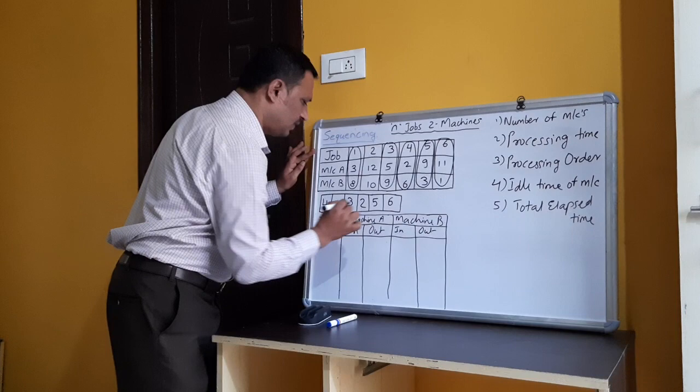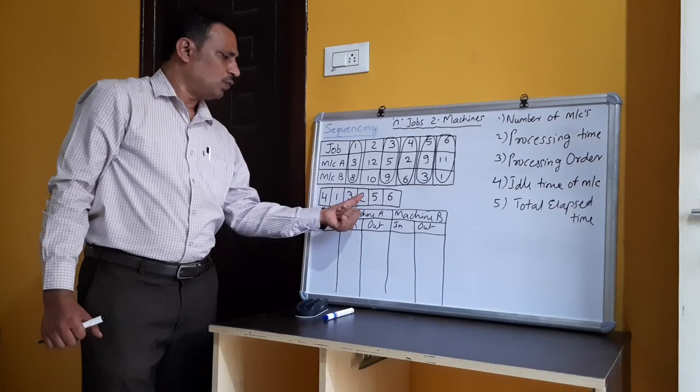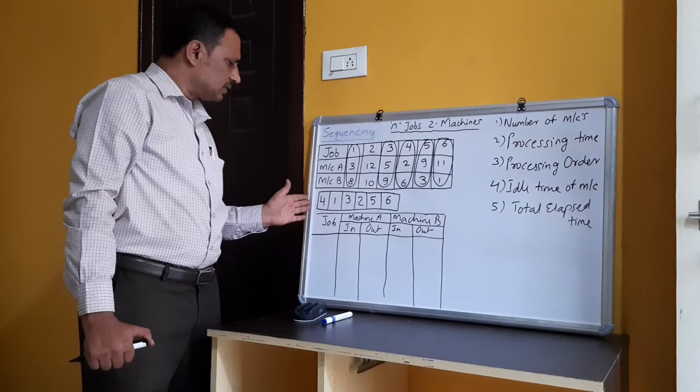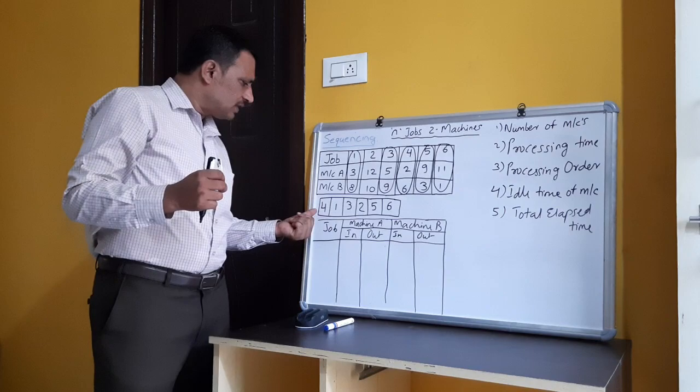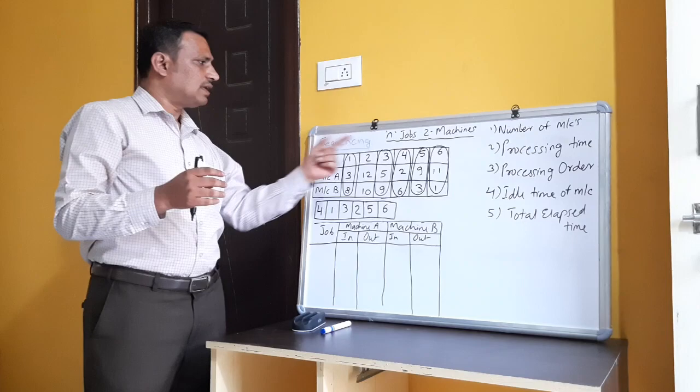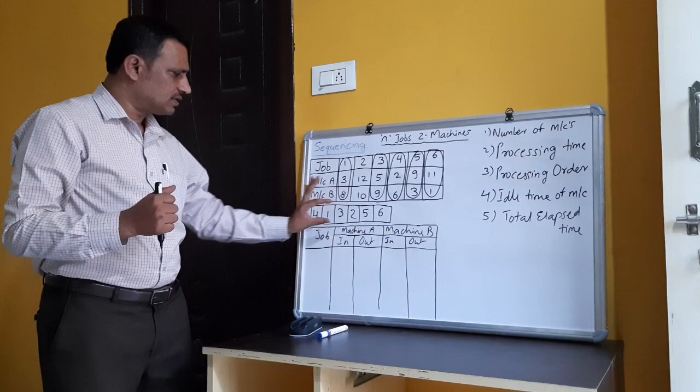We have now obtained the sequence: 4, 1, 3, 2, 5, 6. If instead we process jobs in the order 1, 2, 3, 4, 5, 6, the total elapsed time would be more. By using this sequence, we reduce the elapsed time — that is the main intention of the n jobs two machines problem. We use Johnson's rule to derive this sequence.